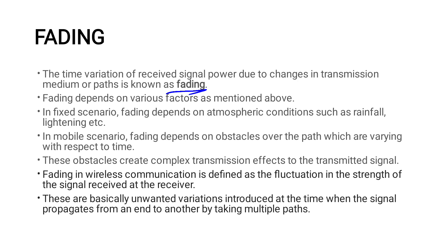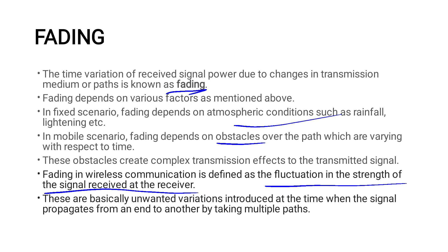This fading depends on conditions — at most fixed conditions it depends on rainfall, lightning. In the mobile scenario, fading is mainly dependent on obstacles. At different times, multiple paths are received. The obstacles create complex transmission effects. In wireless communication, the strength of the signal received fluctuates — and we call that fading.